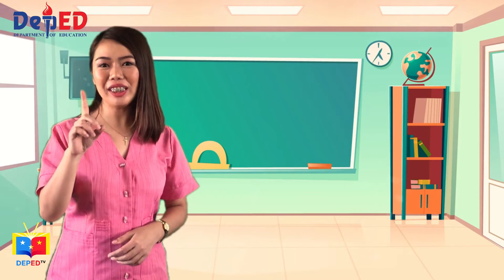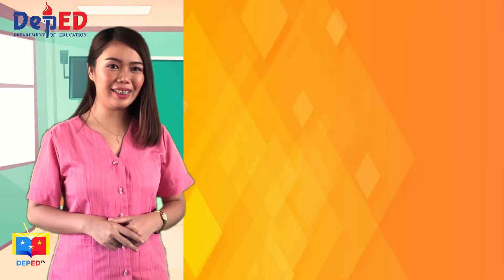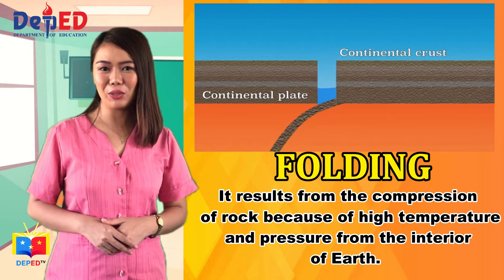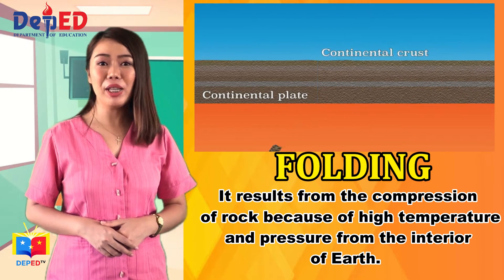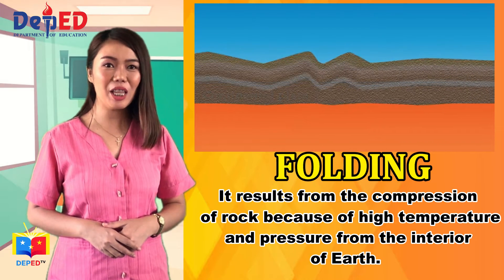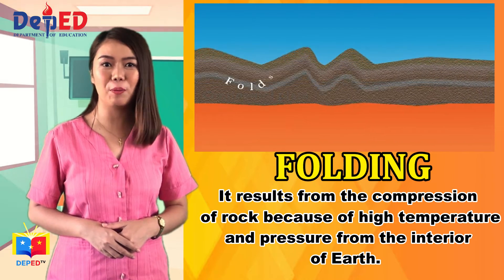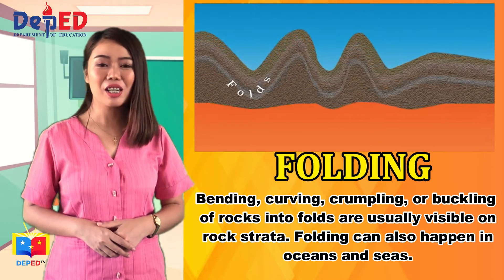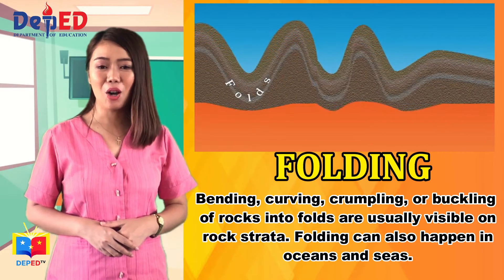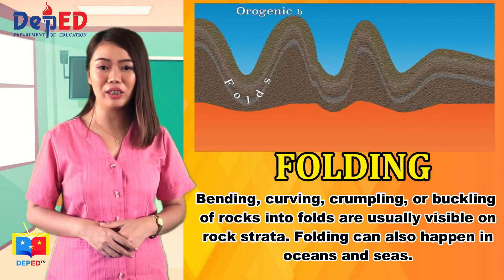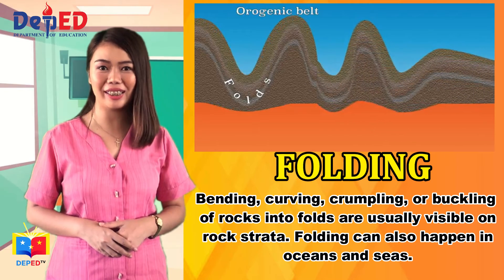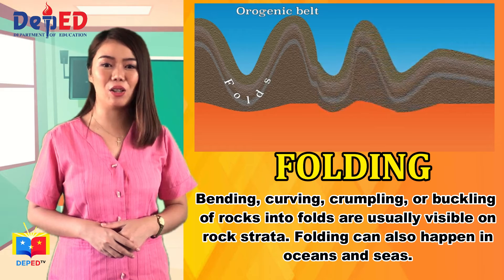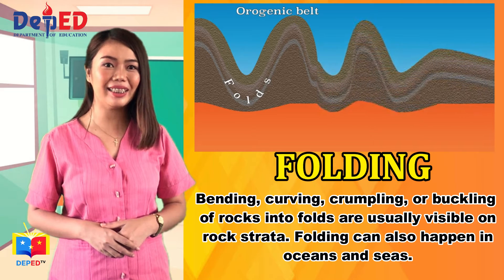The first type of Earth's movement is folding. It results from the compression of rock because of high temperature and pressure from the interior of Earth. Bending, curving, crumpling, or buckling of rocks into folds are usually visible on rock strata. Folding can also happen in oceans and seas.